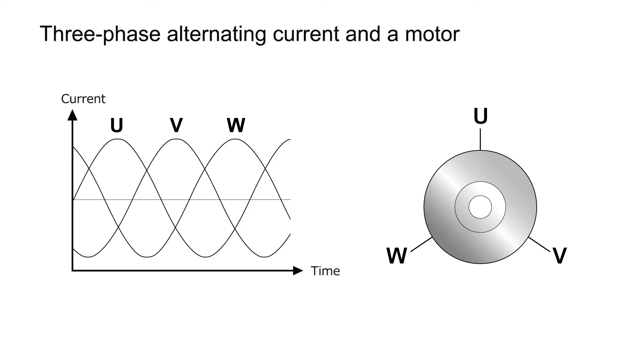That is, the frequency of alternating currents needs to be lower to make the motor rotate slowly. Likewise, the frequency needs to be higher to make the motor rotate at high speed.